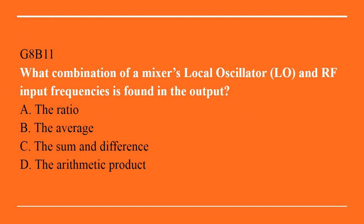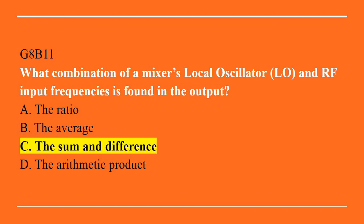G8B11: What combination of a mixer's local oscillator and RF input frequencies is found in the output? A. The ratio. B. The average. C. The sum and difference. D. The arithmetic product. Correct answer is C. The sum and the difference.